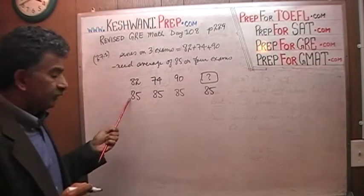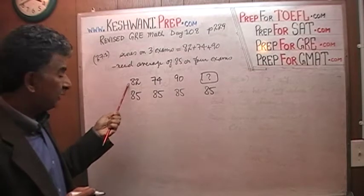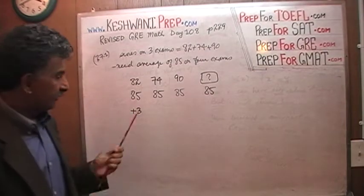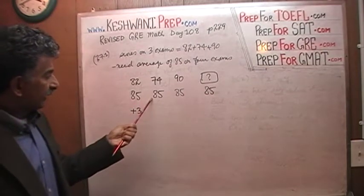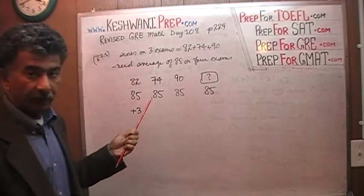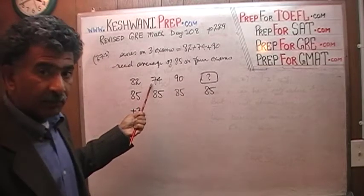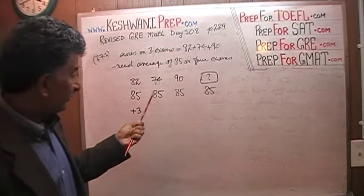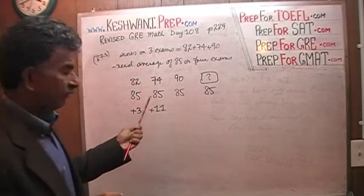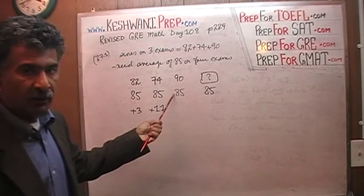I mean, if you take three exams and each of the three exams you score 85, 85 and 85, then on the fourth exam you only need 85 to have an average of 85 on the fourth exam. But the point is, she does not have 85 on the fourth exam, she has only 82. She needed 85, she only has 82. So we have to make up three points. She has to make up three points for the first exam. In the second exam, if she had 85, everything would have been hunky dory.